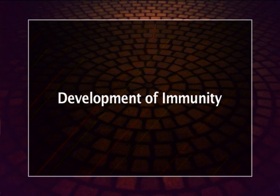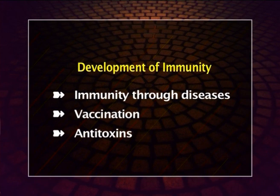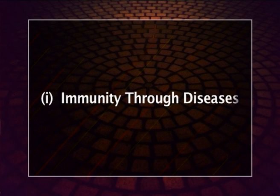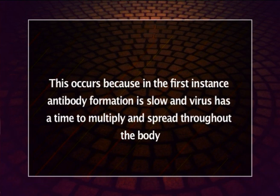A person may develop immunity in three ways. Immunity through disease: the response of an organism to infection by a pathogenic organism varies over time. The first time a person gets infection by a pathogen, they are likely to get the disease. Subsequent infections by the same organism do not cause disease.